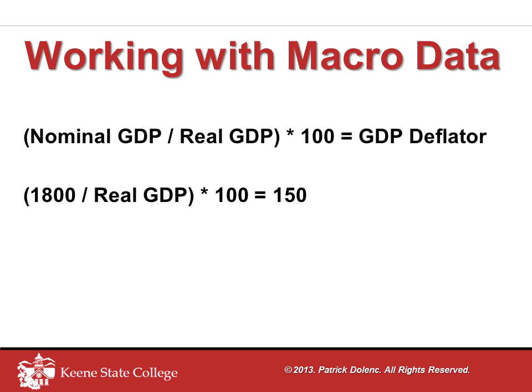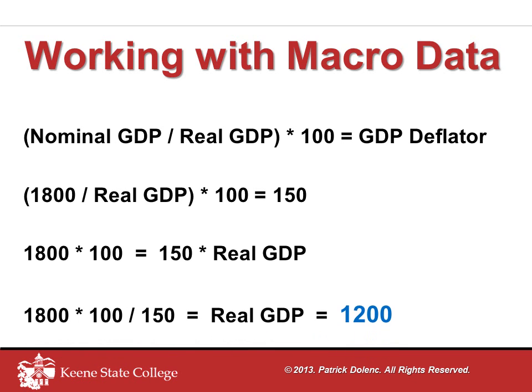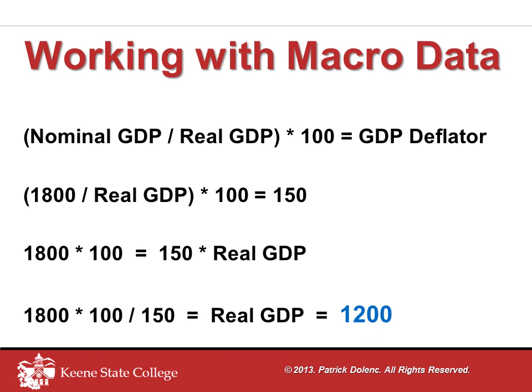This one takes a little bit more work because real GDP is in the denominator. We're going to multiply both sides of the equation by real GDP to get it out of that denominator. That moves it from the left-hand side to the right-hand side. Next, we're going to isolate real GDP, and that requires dividing by 150. You could do the multiplication on the left first and then divide by 150 — it gives the same result. Or you could rearrange slightly so that you have 100 divided by 150, which makes it a little easier to multiply by 1800. However you do this, you'll end up with the answer of 1200.